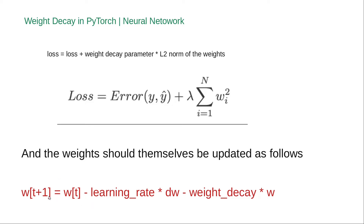For updating the weights themselves under weight decay, the formula is: w(t+1) = w(t) − learning_rate × ∇w − weight_decay × w(t). The weight decay here is the decay factor, same as λ in the loss expression, and it is a hyperparameter that needs to be tuned and given a proper value for the best result.